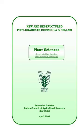Unit 4: Seed Quality Control. Seed legislation: the Seed Act 1966, Seed Rules 1968, Seed Control Order 1983, and Seed Bill 2004. Seed certification: history, concept, organization, phases, and Indian minimum seed certification standards, field inspections, principles and methods of inspection at harvesting, threshing, and processing, pre- and post-processing.